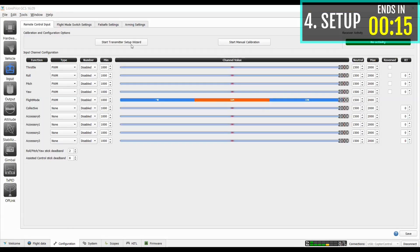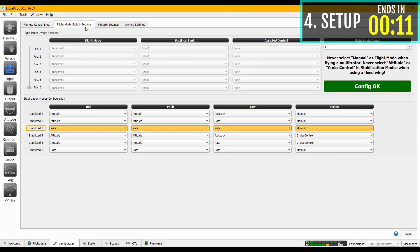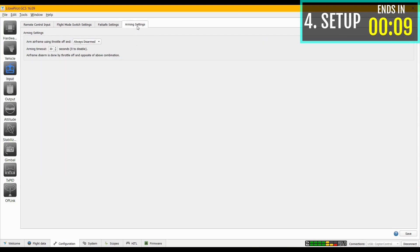After your CC3D is done setting up, then set up your transmitter. Go according to the instructions given. Then go to the arming settings and select left yaw. Click save. And your drone is done setting up.